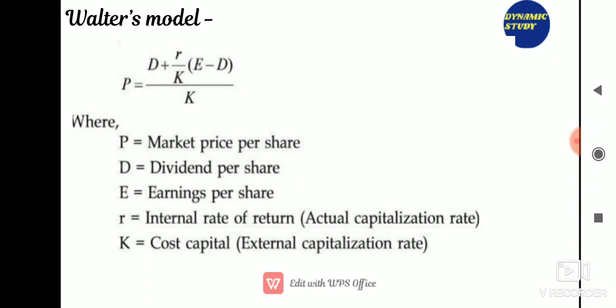In Walter's model: firms where r > Ke are growth firms; firms where r = Ke are normal firms; and firms where r < Ke are declining firms. For normal firms, dividend policy will have no effect on the market value per share. For declining firms, management should distribute earnings to stockholders so they may invest elsewhere to earn higher returns.